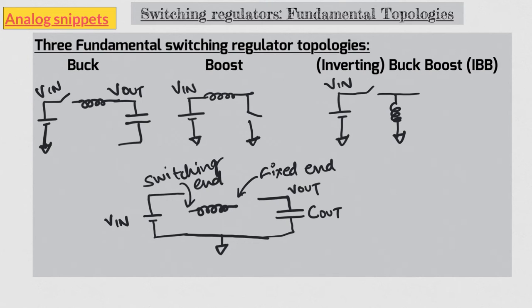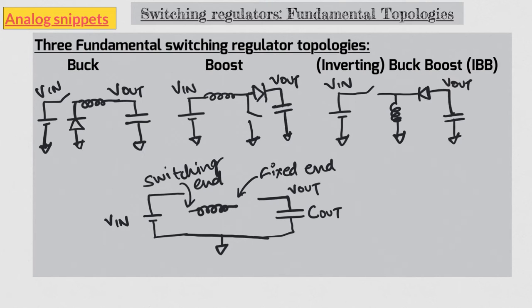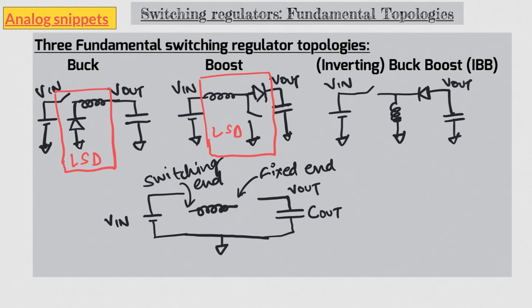So let's put a diode and complete the circuit. Take some time to convince yourself that the diode is indeed off during t_on. Notice that in all three cases, between V_in and V_out we have three elements: an inductor, a switch, and a diode. Sometimes these three elements are grouped together and this cell is known as the LSD cell, where L stands for inductor, S for switch, and D for diode. This diode is also known as the freewheeling diode or catch diode.